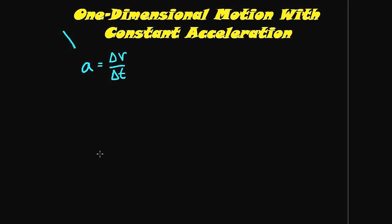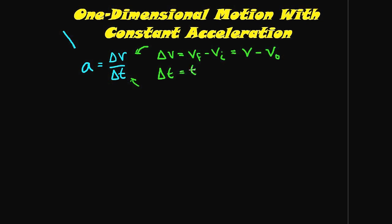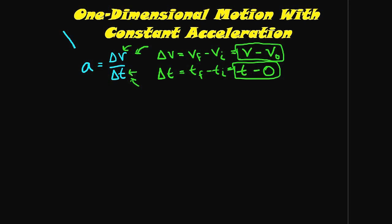When you open your textbook to constant acceleration, you see many manipulations of these formulas. You take the basic formula for constant acceleration and ask: is there any other way to write these two terms? The change in velocity equals the final velocity minus the initial velocity, and the change in time equals the final time minus zero. We plug these into our formula, replacing delta-V and delta-t.